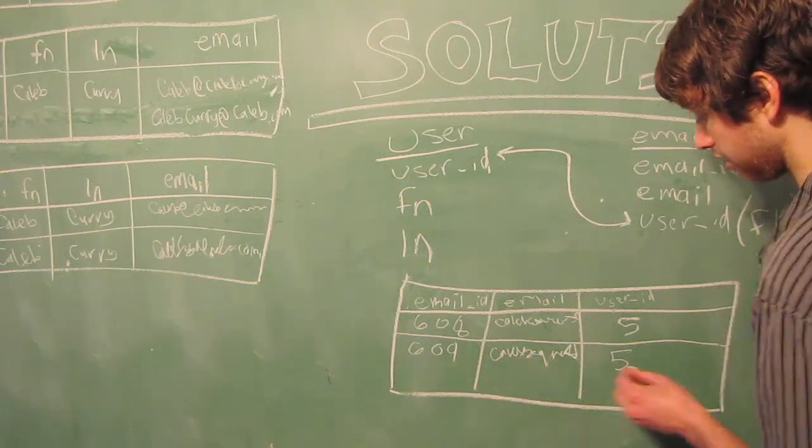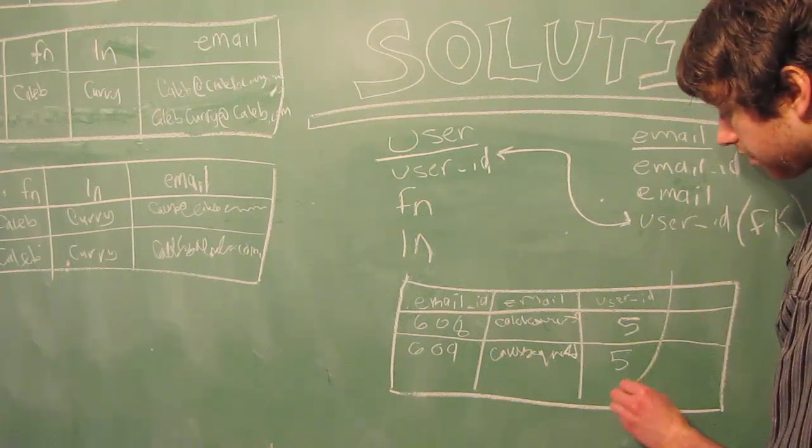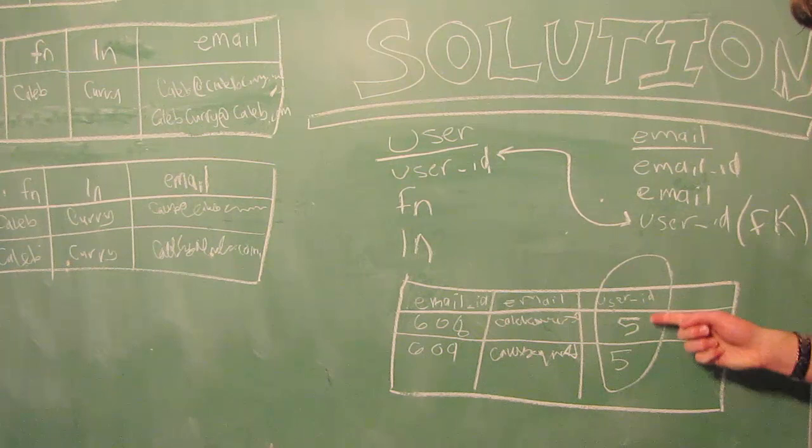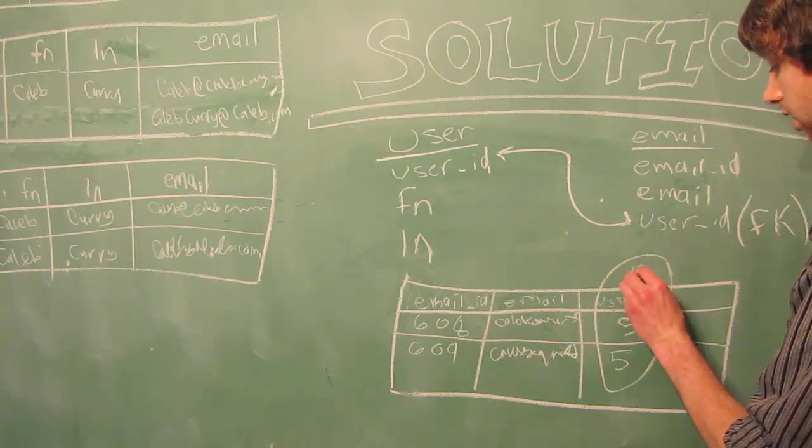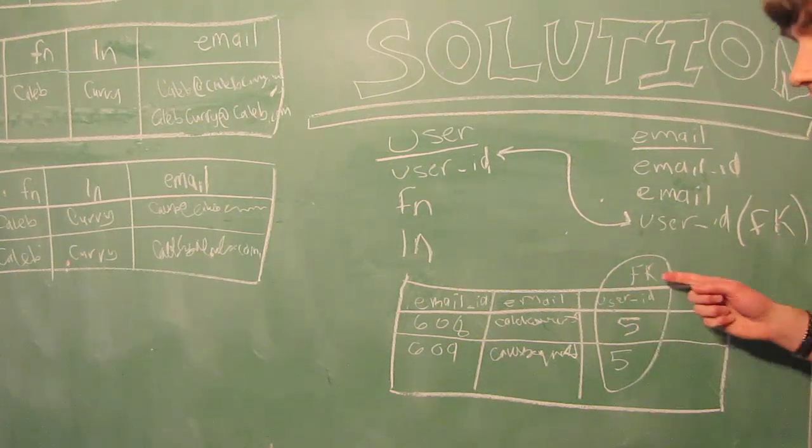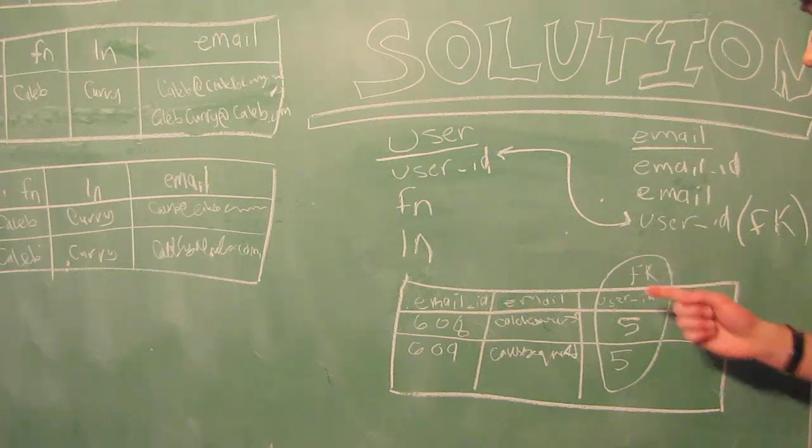Now this repeating value is okay. This repeat right here, this is okay because this is a foreign key. And multiple emails are allowed in this situation.